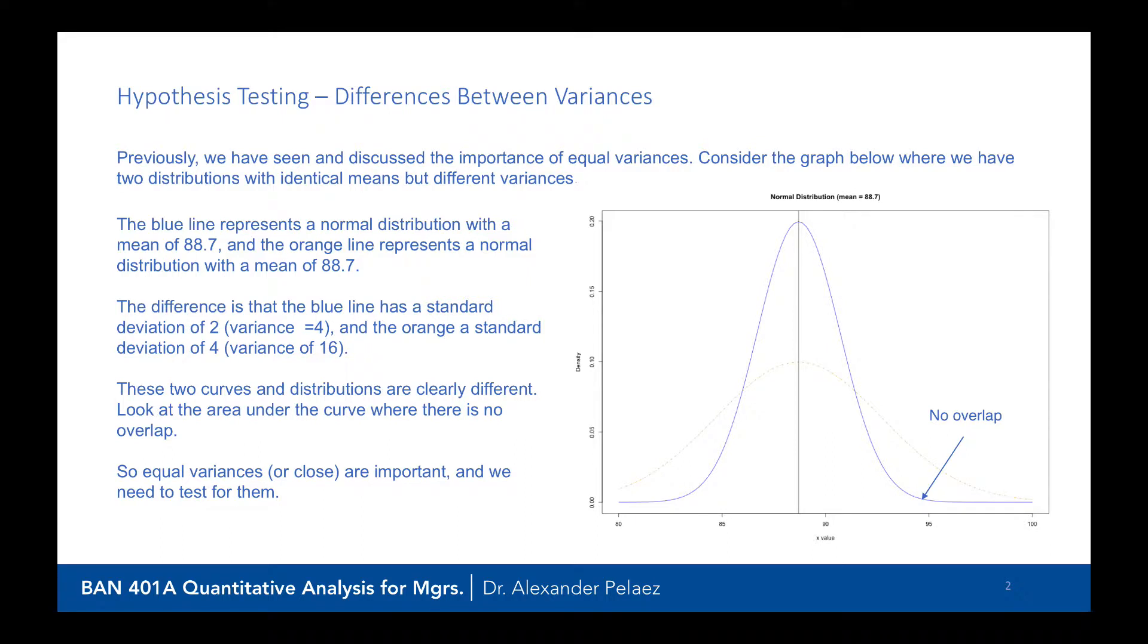Previously we had spoken about the importance of equal variances. Now let's understand why that's important. On the right we have a normal distribution curve. We actually have two.